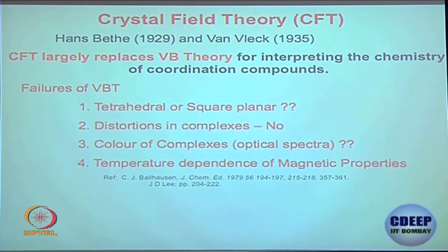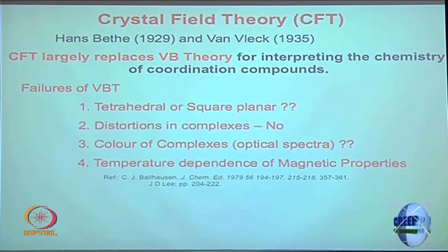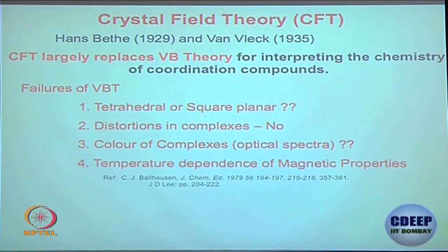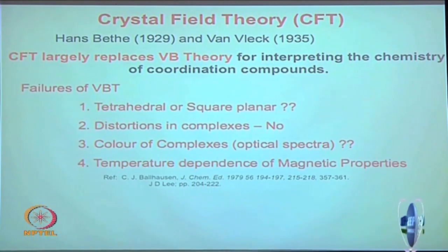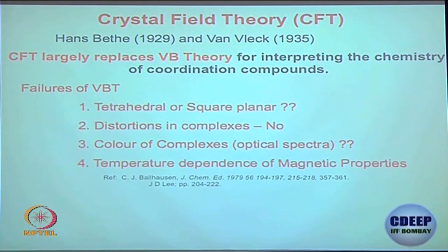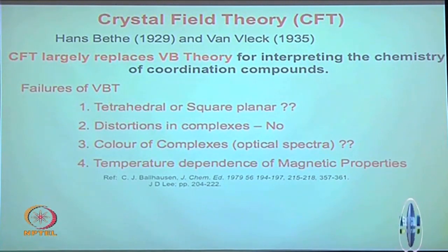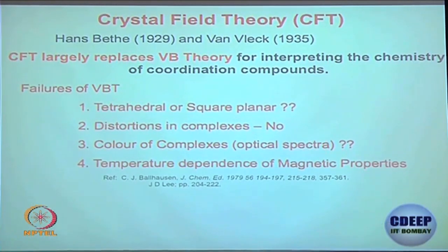What we are saying is that valence bond theory really cannot explain tetrahedral and square planar complexes. When there is any distortion, valence bond theory is discussing an ideal situation - bond elongation and shortening cannot be explained by valence bond theory. You will see in a moment how distortion is handled by crystal field theory. Color of complexes also cannot be explained - you cannot have any idea about what color the complex should be. Temperature dependence - why magnetic properties depend on temperature, whether magnetic susceptibility goes up or down - we will be discussing those.